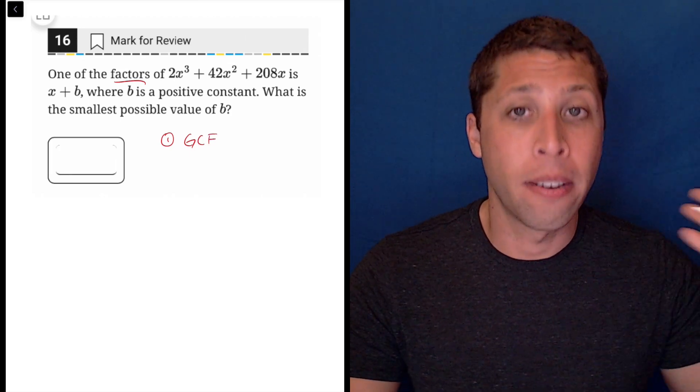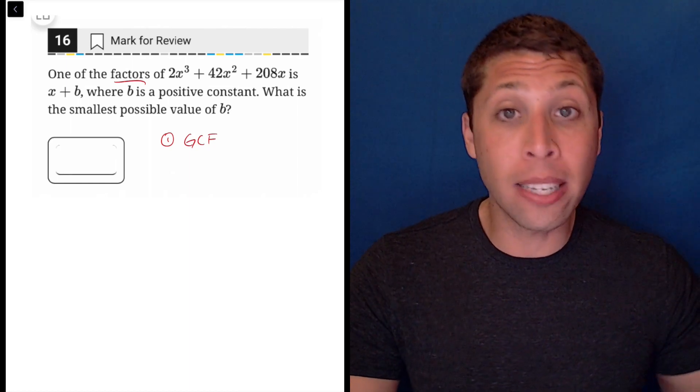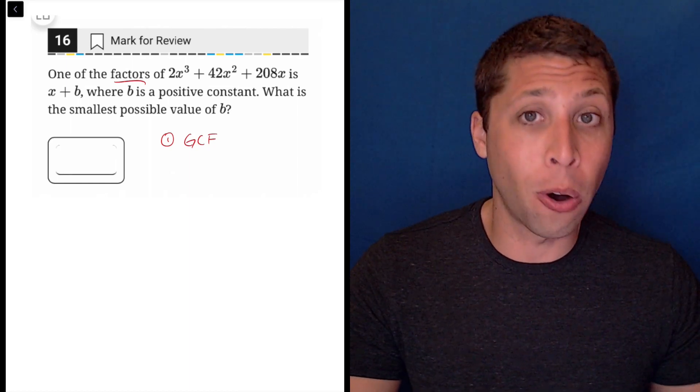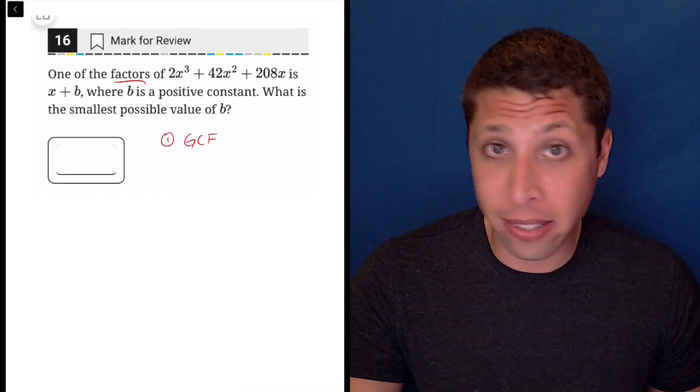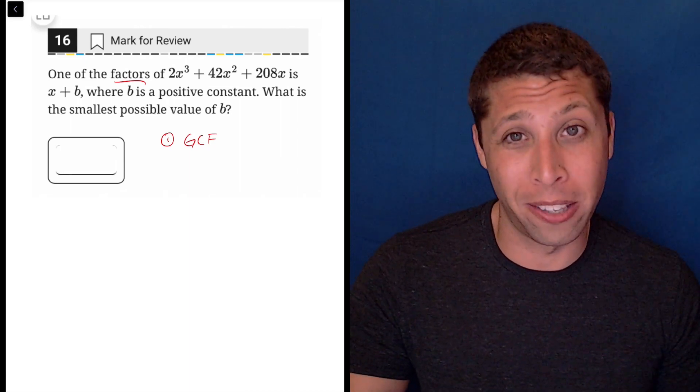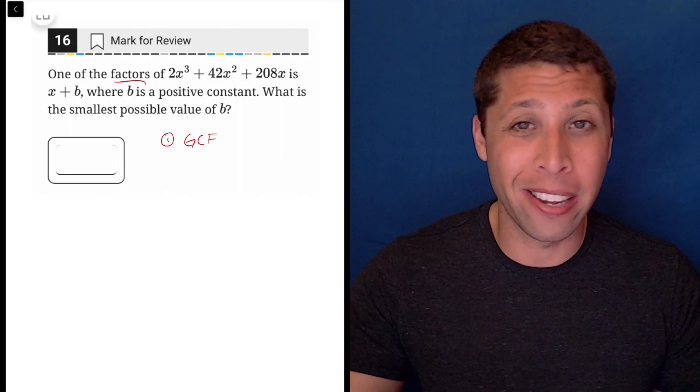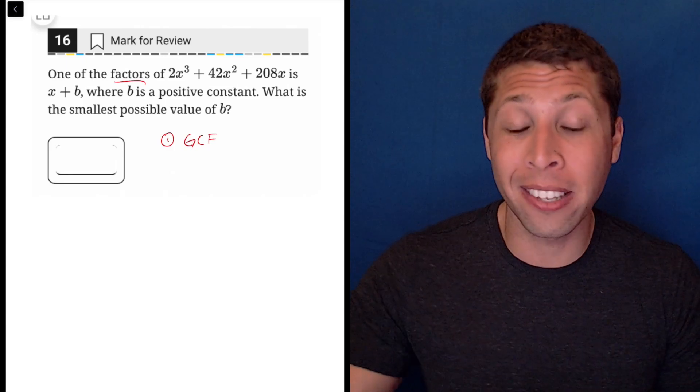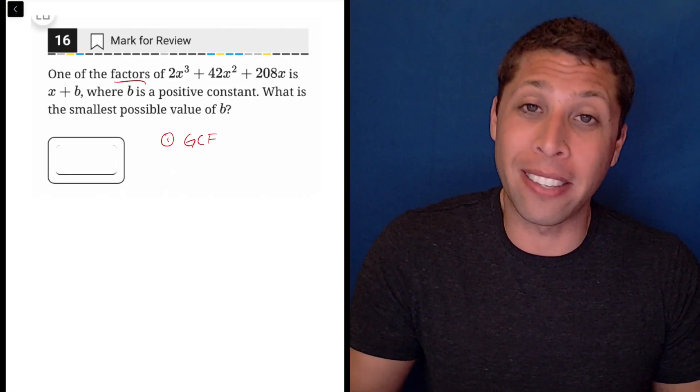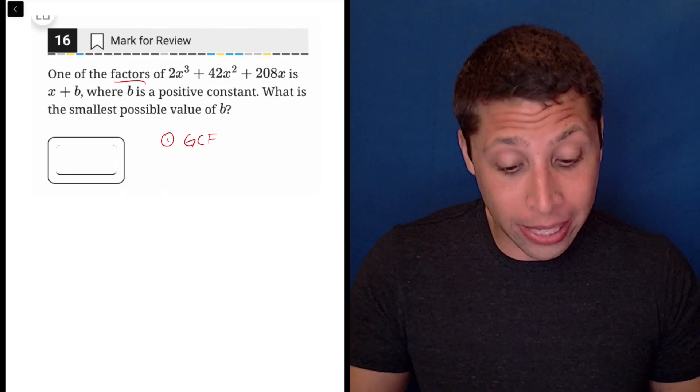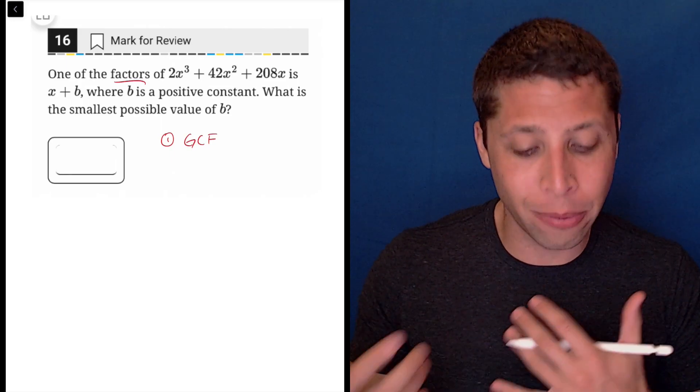GCF is the greatest common factor - what's the biggest thing that divides into all the components? Sometimes there is nothing, or the GCF is one, so it doesn't affect how we factor. In a lot of quadratics we don't even do this step. But in something like this, I really want it to work because I don't want to deal with an x cubed.